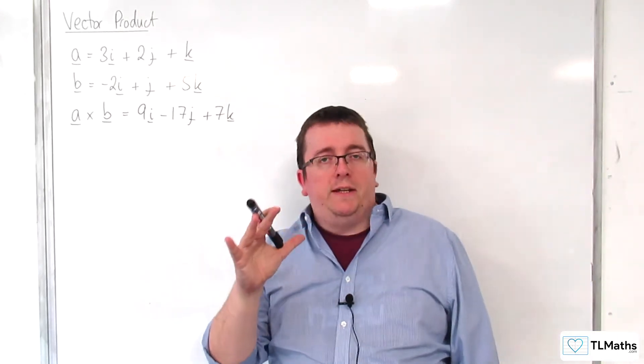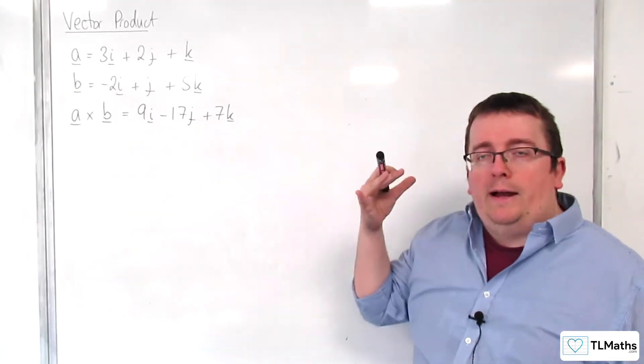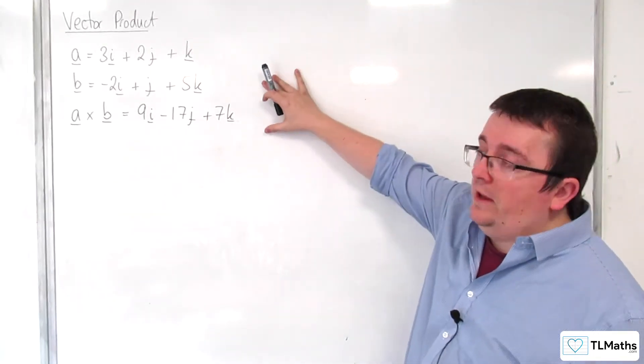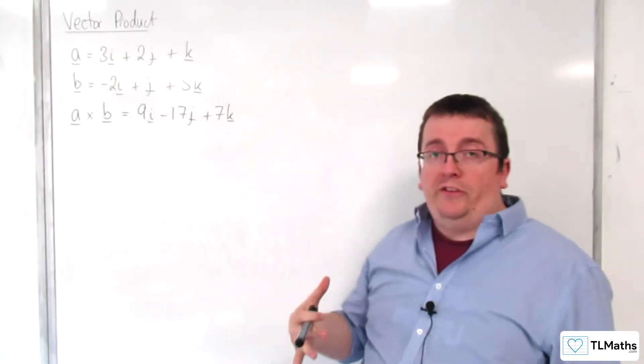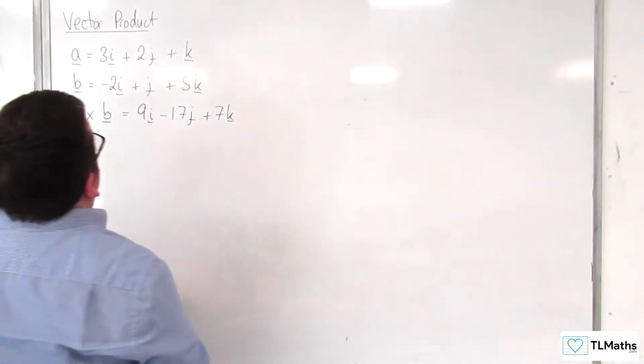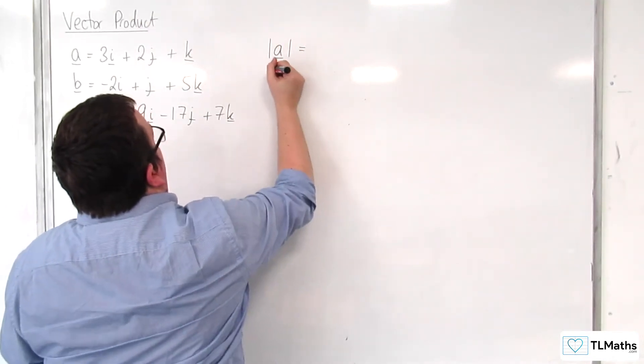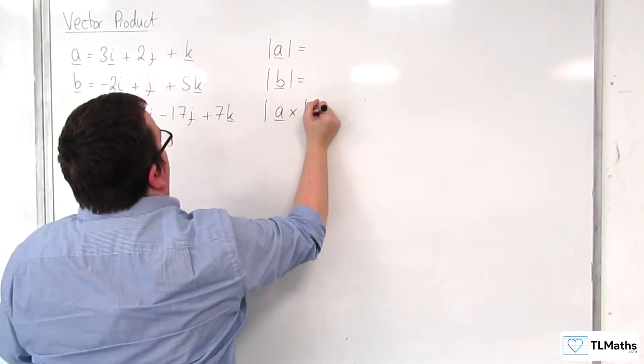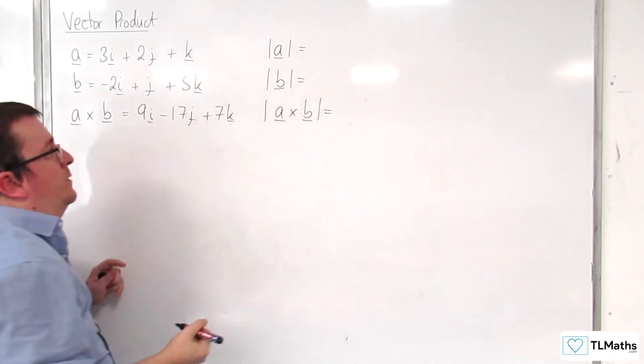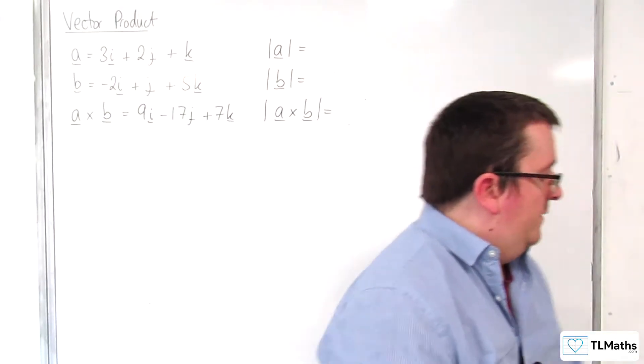Now, what we're going to do is investigate one of the properties of the cross product, using this as a springboard example. The first thing I'm going to do is find the length of A, the length of B, and the length of A cross B. And we're going to see if there's any kind of joining property for these.